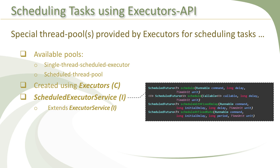The ScheduledExecutorService interface adds four methods to the mix: two overloaded schedule methods, scheduleWithFixedDelay, and scheduleAtFixedRate. Out of the two schedule methods, one schedules a Runnable and the other schedules a Callable for one-time scheduled execution in the future. Callables cannot be scheduled for repeated execution, which is why scheduleWithFixedDelay and scheduleAtFixedRate are not overloaded — they accept only Runnables.